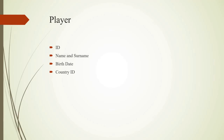Player Entity is the primary entity in our diagram and it has attributes: id, name and surname, birthdate, and country id. Player Entity has one domain relationship with Country Entity because a player can be a member of more than one country.